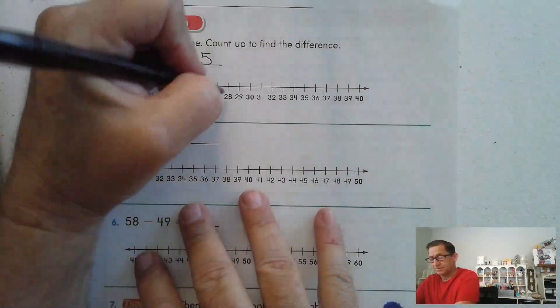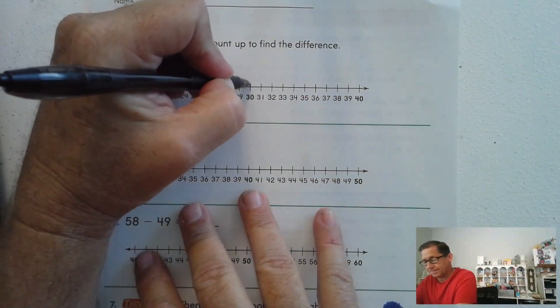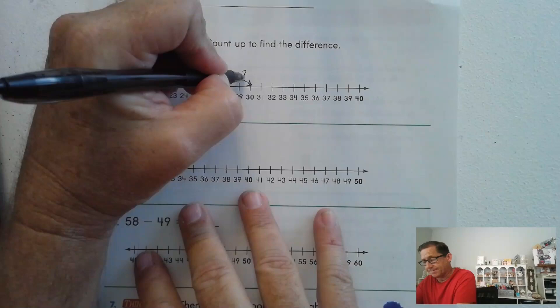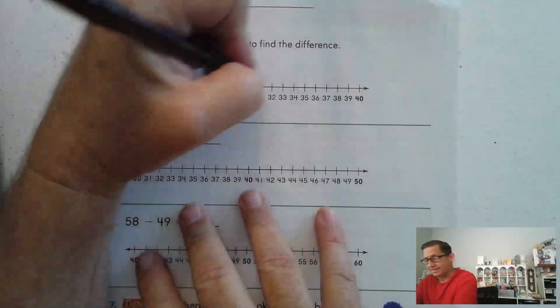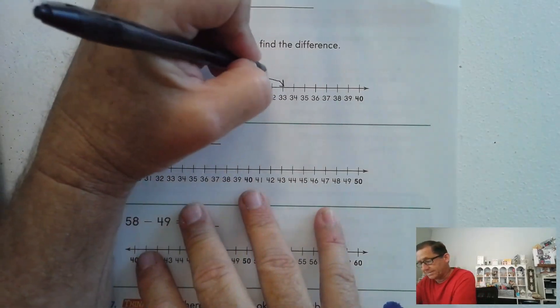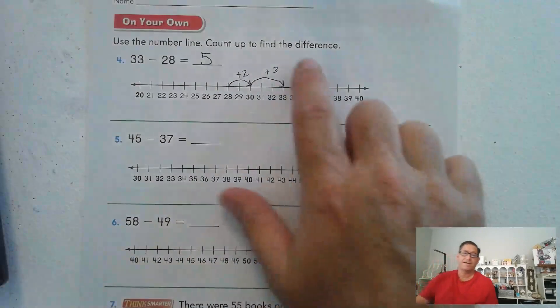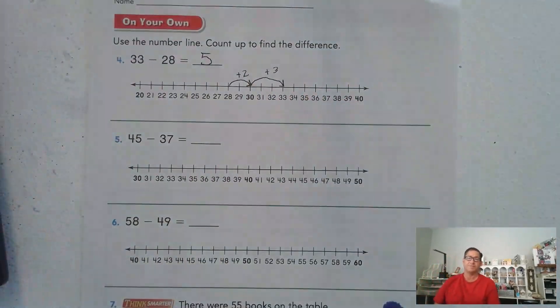Now let's show that. So we're starting at 28. And we had to go to 30. And then we had to jump 3 more to get to 33. And 3 plus 2 is 5.